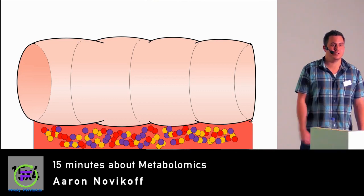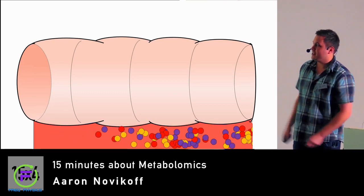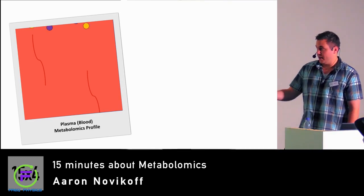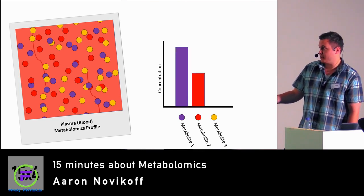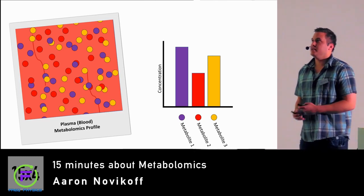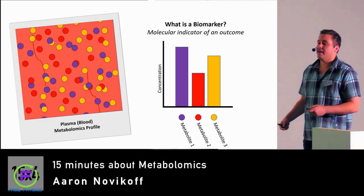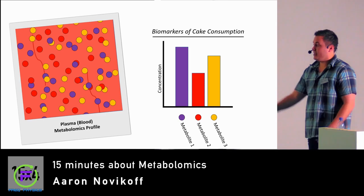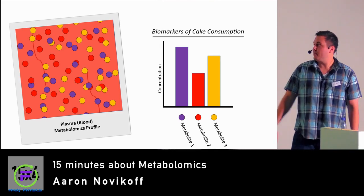This is where we are introduced to our first metabolomics technique. As the metabolites travel through the blood, we're able to take a picture and see what's really going on. We can quantify the levels of metabolites — metabolite 1, metabolite 2, and metabolite 3 — to see how much is present. This is used for identifying biomarkers. A biomarker is a molecular indicator of an outcome. In this simple example, elevated metabolite 1 and elevated metabolite 3 are biomarkers of cake consumption.